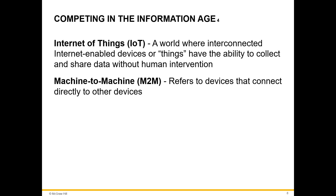Another development made possible by the information age is the Internet of Things (IoT). It refers to internet-enabled devices that have the capability of collecting and sharing data without human intervention. For example, wristbands are used to collect users' information on calories burned or their vitals like heartbeat. Another term associated with IoT is M2M, which refers to devices that connect directly to other devices. For example, smartwatches can connect to smartphones and transfer information without human intervention. With the emergence of these technologies, a huge amount of information is created every second.